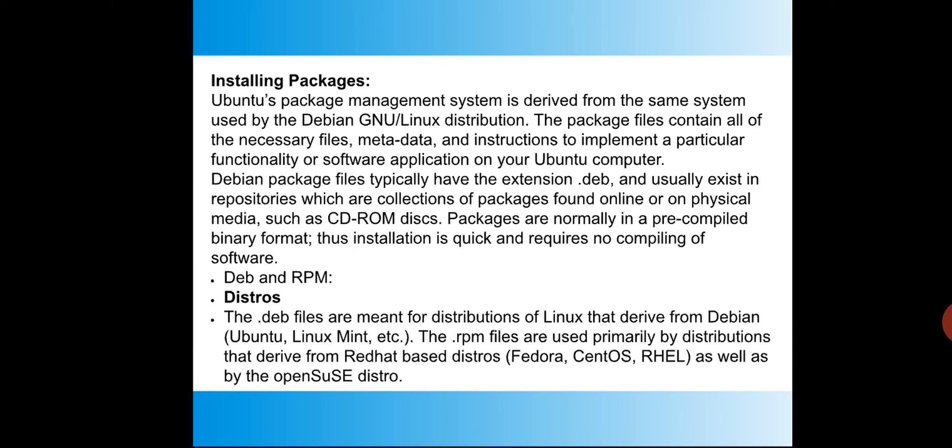The .rpm files are used primarily by Red Hat-based distributions. Red Hat is available for both free and commercial/paid use. RPM-based distros include Fedora, CentOS, Red Hat, and openSUSE. These are the key distros to remember for deb and rpm package types.